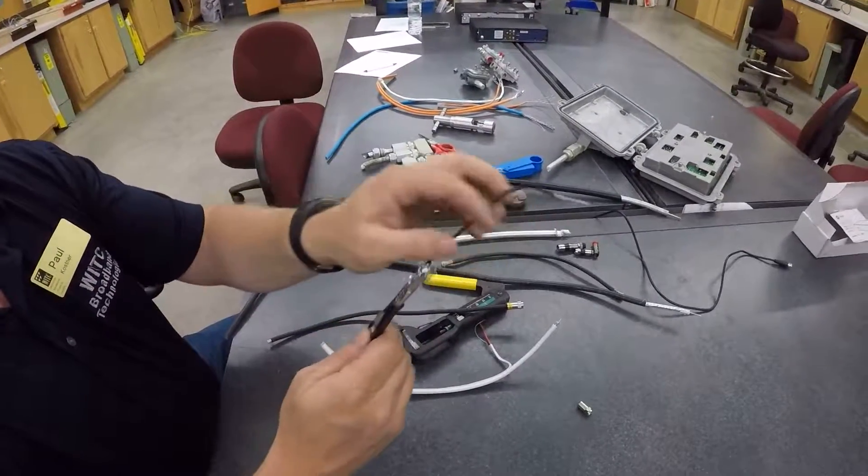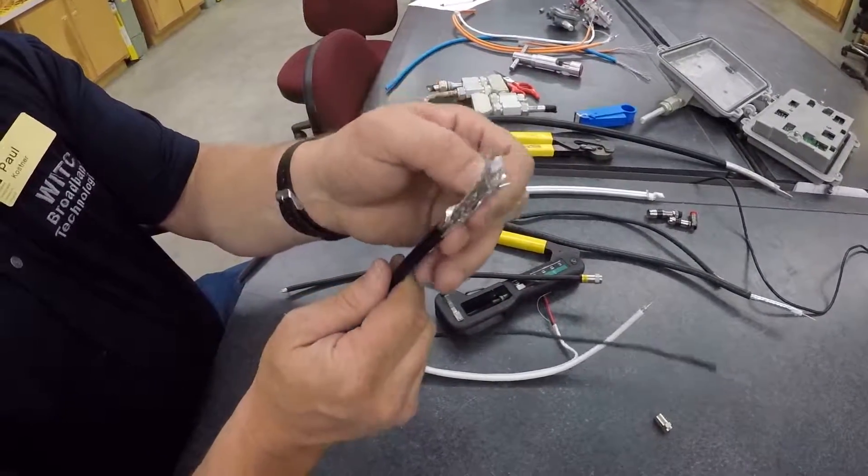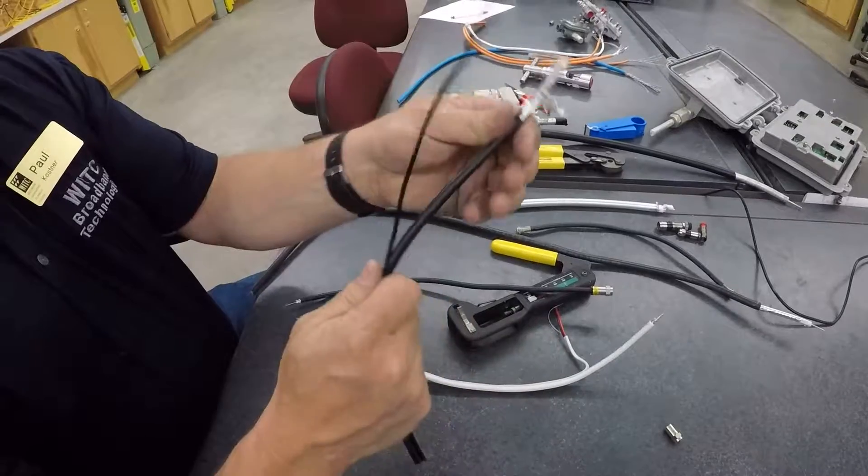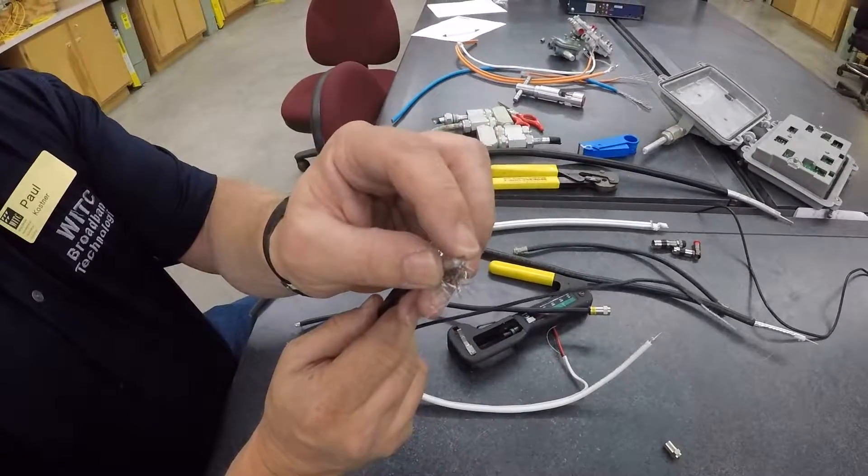Same type of internal components, you're going to have your polyethylene, your braided shield to give it flexibility, your dielectric, and your center conductor.